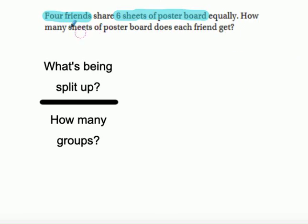And if you look at the question, it says how many sheets of poster board does each friend get? So that tells us which one is being split up. Remember, that's our top number. Well, in this situation, it's either the four friends or the six sheets of poster board. So what's being split up? The poster board is.